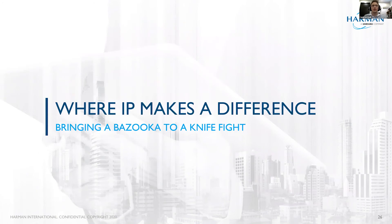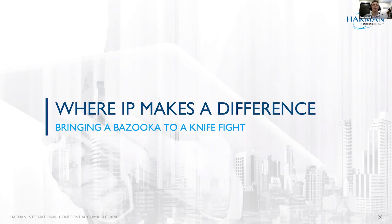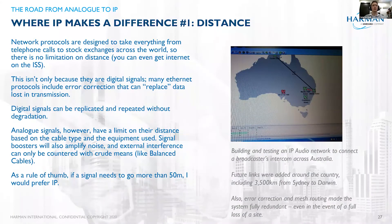Now for the promised land — a couple of case studies where we've used IP and it actually made a difference. I do think that sometimes you can bring a bazooka to a knife fight and try to do too much with IP when a simple analog solution would be more than enough. So case study number one: distance. I showed you before the example with a 350-meter run between the processing rack and the amplifiers, but that's easy mode for IP. Network protocols are designed to be infinitely repeatable and infinitely scalable — we can get internet on the ISS, and you guys are watching from different countries.